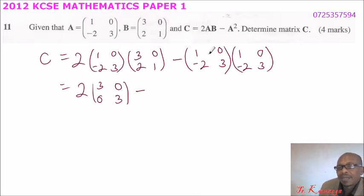Minus this one you multiply: 1 multiplied by 1 is 1, 0 multiplied by -2 is 0, so here you will be left with 1. Then we have 1 multiplied by 0 is 0, 0 multiplied by 3 is 0, so here we have 0.